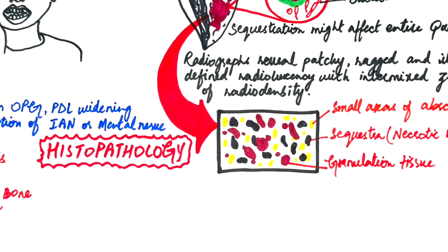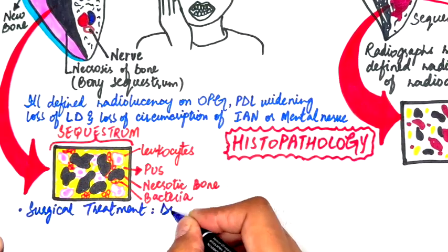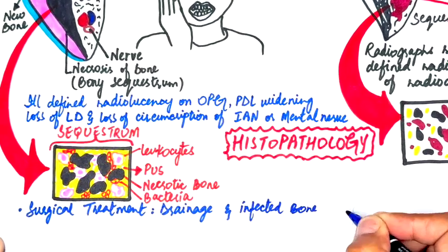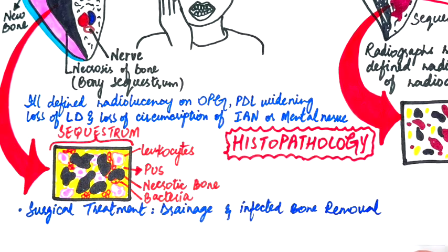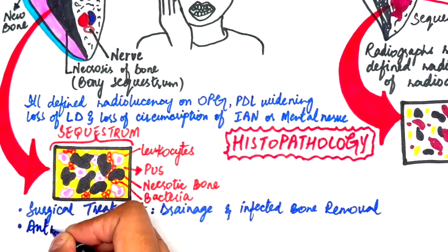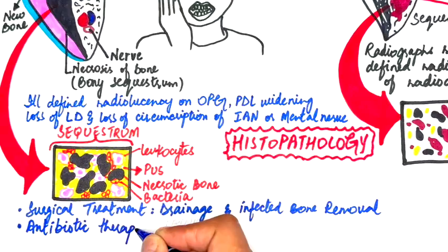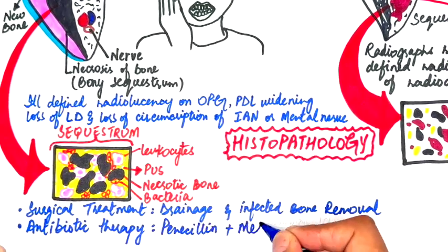Acute suppurative osteomyelitis can be treated surgically or with antibiotic therapy. The surgical treatment aims at eliminating the infection source, establishing drainage, removing infected bone, and obtaining bacteriologic samples. Empirical antibiotics, typically penicillin combined with metronidazole or clindamycin, are given until culture results are available.